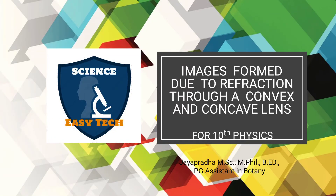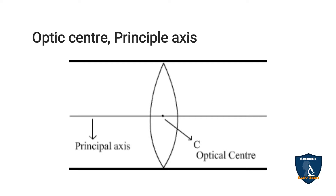Today in physics, in second lesson, optics, you are going to see about the image formed due to refraction through the convex and concave lens. Before going into detail about it, you must know some of the technical points, that is technical terms.